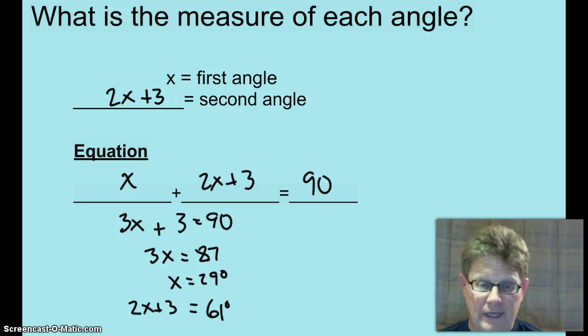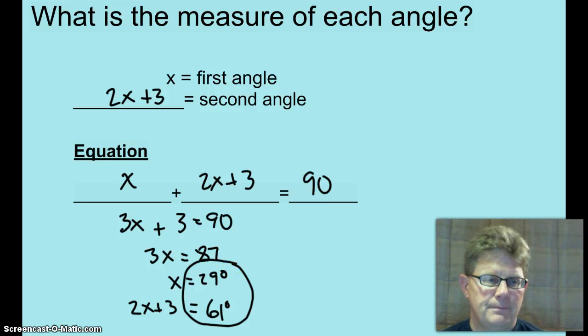x does equal 29 degrees. So the other angle, 2x plus 3, 61 degrees. So our answer is right there. Moving right along.